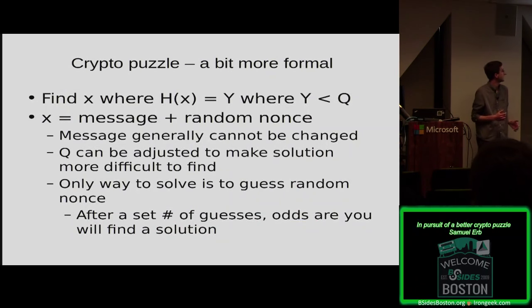So, defining crypto puzzles a little bit more formally, we're going to look for some x value, which is going to be a message as well as a random nonce, where a cryptographic hash of that x value is going to be equal to y, where y is going to be less than some difficulty, q. And we're going to say q can be adjusted to make a solution more or less difficult, and in general the message can't be changed, so our only way to solve this is to guess what the random nonce value is. So, we're going to try a bunch of these, and after a set number of guesses, odds are, the probability, you're going to find a solution. And for the rest of this talk, I'm going to be trying to identify what makes a good hash function here, and then we'll look at some examples.